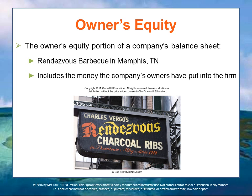Owners sometimes put money into the company, or leave money in the company. When the business is operating on a going concern basis and making profits, you leave that money in there — you buy additional restaurants, buy equipment — and all of that stays in the company as part of the owner's value.